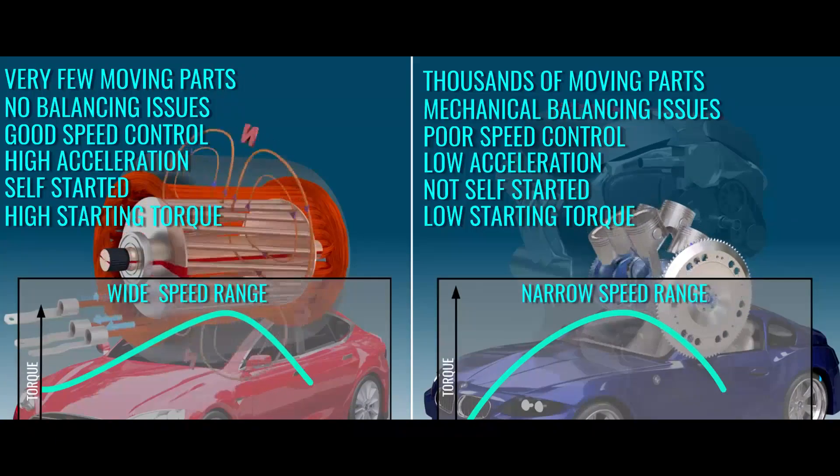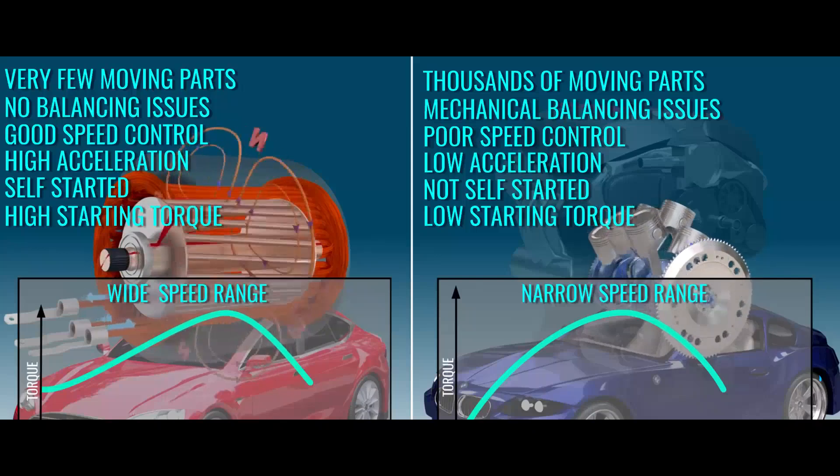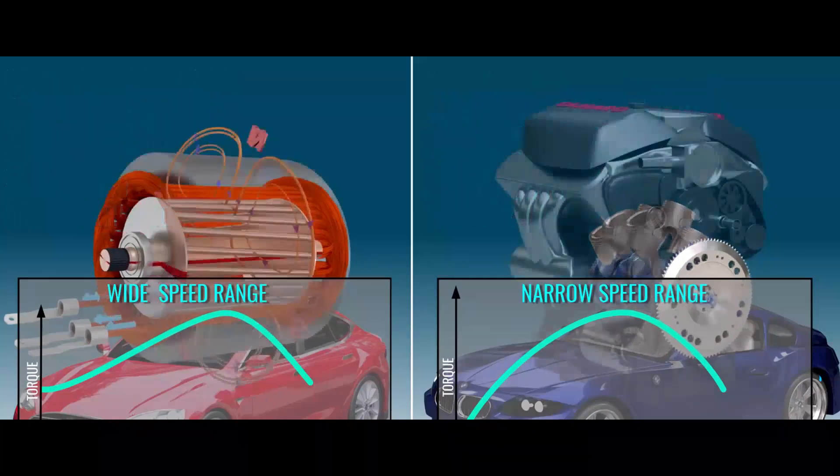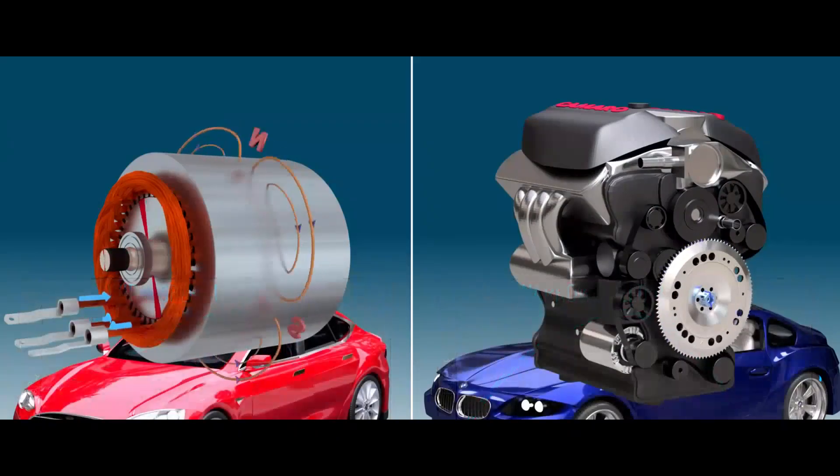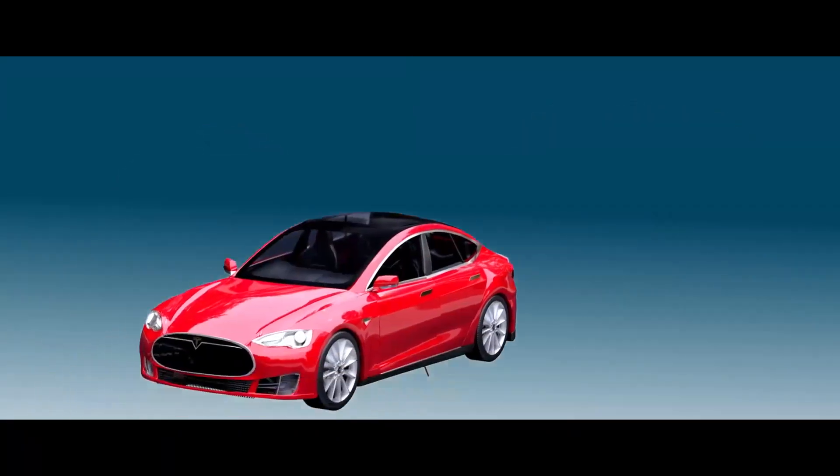Another huge disadvantage of IC engines is that they only produce usable torque in a narrow band of engine RPM. Considering all of these factors, induction motors are definitely the perfect choice for an automobile. However, the power supply for an induction motor is the real bottleneck in achieving a major induction motor revolution in the automobile industry.